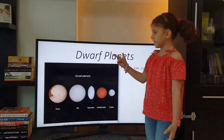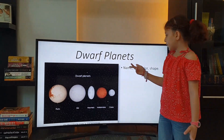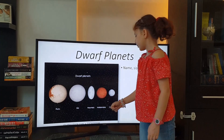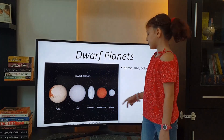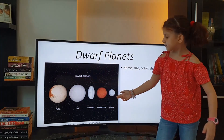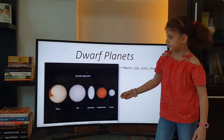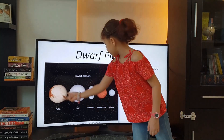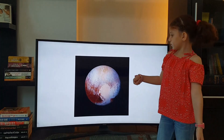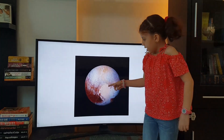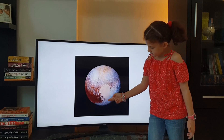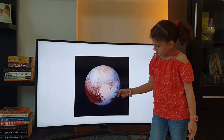The dwarf planets' names are Pluto, Eris, Haumea, Makemake, and Ceres. Their size is listed from biggest to smallest — Pluto is the biggest and Ceres is the smallest. Pluto may have a heart shape on its surface.